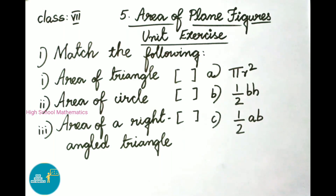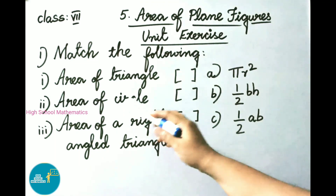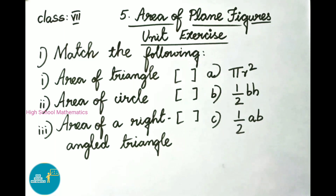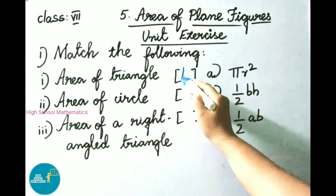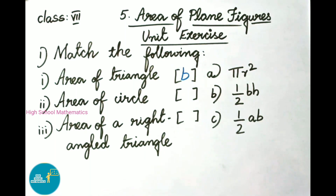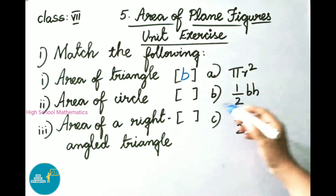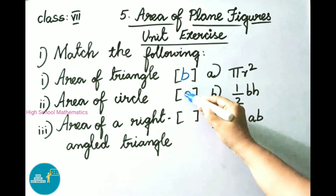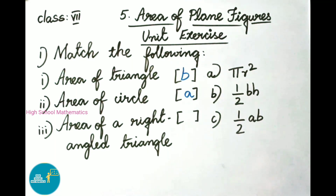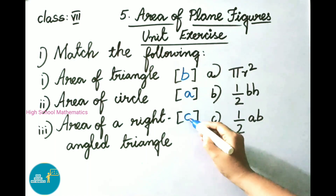First question: match the following. Area of triangle — the formula is half bh, so write option b. Area of circle is pi r square, so write option a. Area of a right angle triangle is half ab, so write option c.